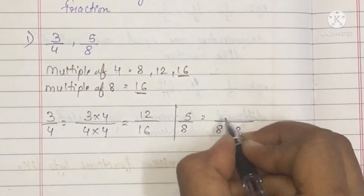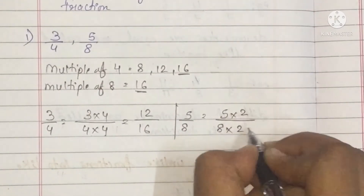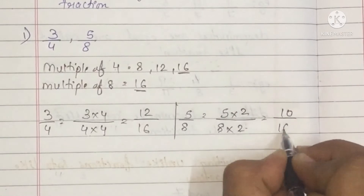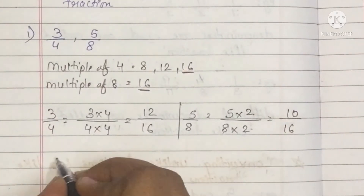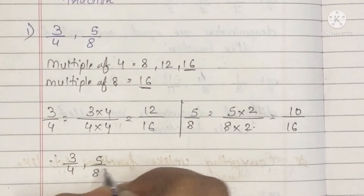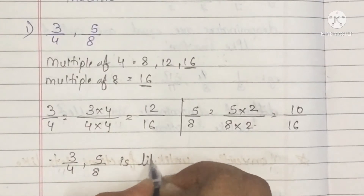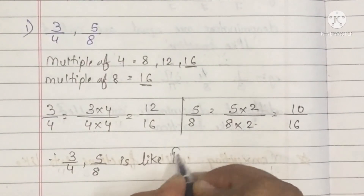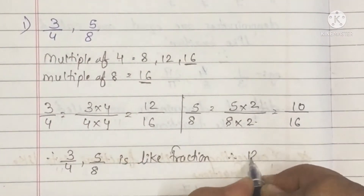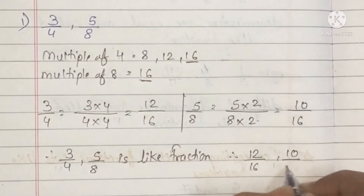For 5 upon 8, we multiply by 2 because 8 twos are 16. So 5 twos are 10 and 8 twos are 16. We got 3 upon 4 and 5 upon 8 as like fractions — that is 12 upon 16 and 10 upon 16.